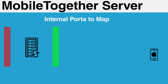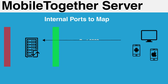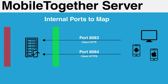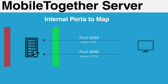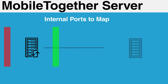Internally, you will be mapping a few extra ports. Ports 8083 and 8084 are used for client connections, similar to external. In addition, ports 8085 and 8086 are used by both administrators and developers to manage and deploy apps to your server — these connections happen via HTTP and HTTPS respectively. Should you choose to enable email within your apps, you will also need to open port 25 outbound to your SMTP server.